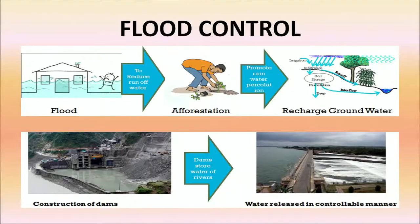Sometimes it might not be possible to prevent a flood even if we know it is about to occur. However, there are certain actions that can be taken to significantly reduce the impact or reduce the possibility of flooding, as illustrated in the flood control diagram.